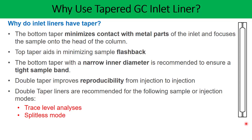In splitless mode there is not much carrier gas flow available inside the injector port, and hence the double taper can help you improve the vaporization and transfer of the vaporized sample onto the column. So it is always preferred to use the double taper liner in splitless mode. Third, for low boiling point compounds — compounds with a low boiling point get evaporated very easily and there may be non-homogeneous mixing of your diluent with these low boiling point compounds, especially if your diluent is a high boiling solvent. The double taper also helps in improving the homogeneity of this vapor, and hence it is preferred for low boiling point compounds.